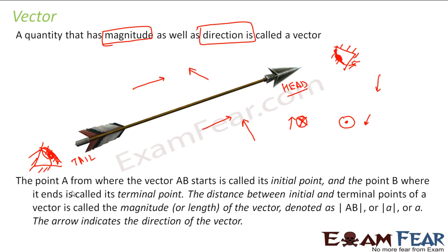And to note here, the point A from where the vector AB starts is called its initial point, so this is initial point, point A and the point B where it ends is called its terminal point. As I told, this is tail, this is head. And the distance between initial and terminal point, this distance is called magnitude. So, for this vector, this length is the magnitude, and this is denoted by |AB|, or |a|. So, if my vector is AB, so my magnitude is this length, this is magnitude.